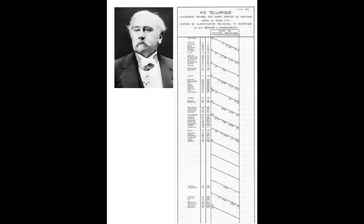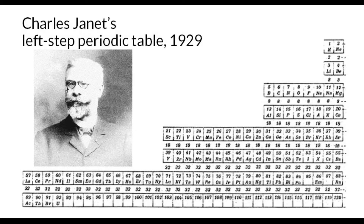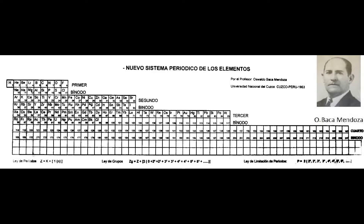Seven years before, in 1862, Charles de Chancourtois had proposed his spiral rolled on a cylinder. In 1929, Charles Janet published his left-step periodic table. And in 1953, the Peruvian scientist Oswaldo Baca Mendoza published his periodic table with stair steps, based on mathematical genetic laws, binodes or pairs of symmetric periods.